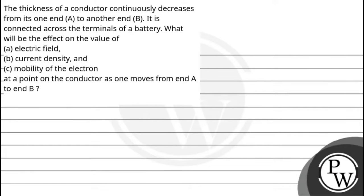Hello, let's see this question. The question says the thickness of the conductor continuously decreases from its one end A to another end B. It is connected across the terminals of the battery. What will be the effect on the value of A: electric field, B: current density, and C: mobility of electron at a point on the conductor as one moves from end A to end B?